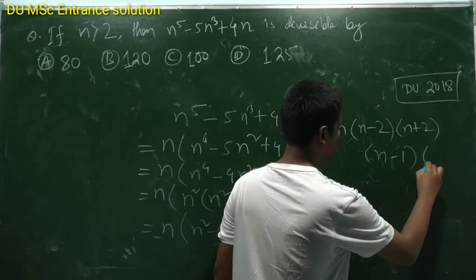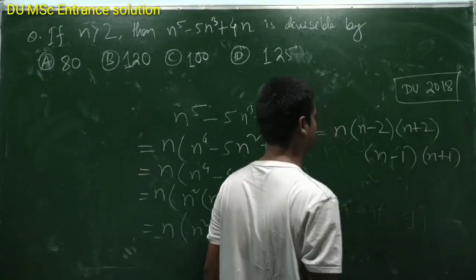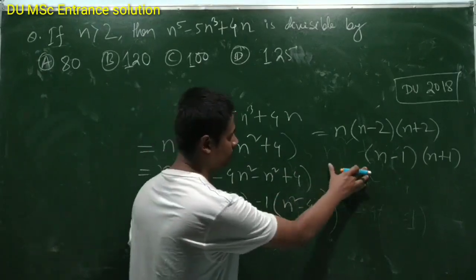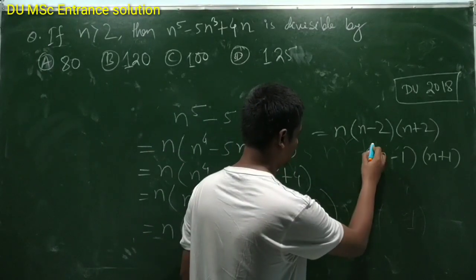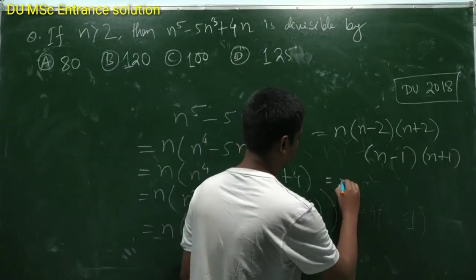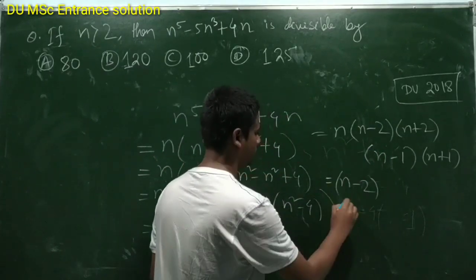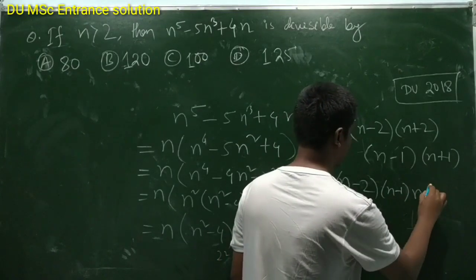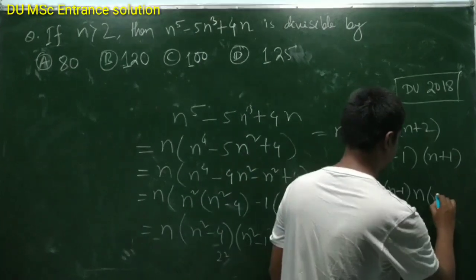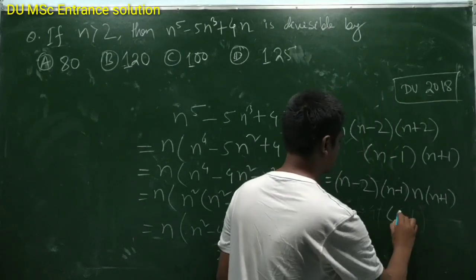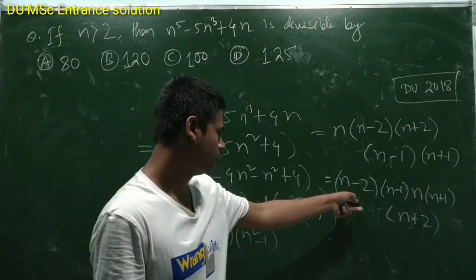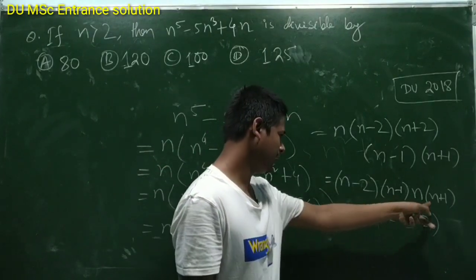Now see, if we manipulate this factorization as n minus 2 into n minus 1 into n, n plus 1, then n plus 2. Now see, n minus 2, n minus 1, n, n plus 1, n plus 2, so these are nothing but five consecutive integers.